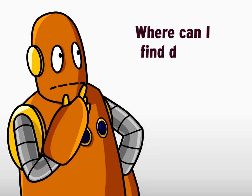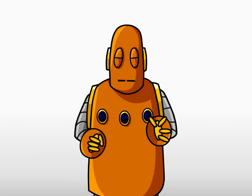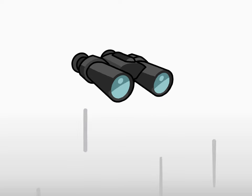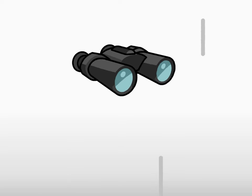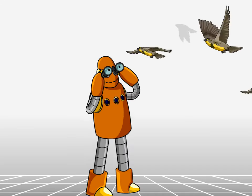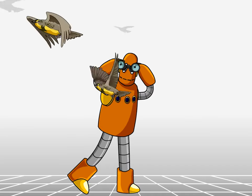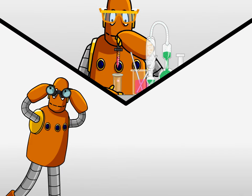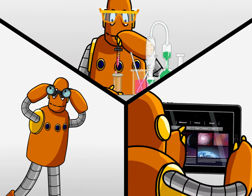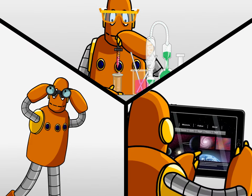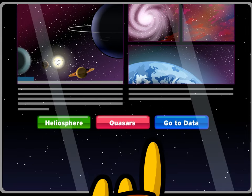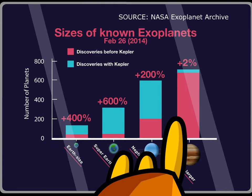Where can I find data? Data are everywhere if you're looking. You can collect your own by observing or measuring some aspect of the world around you, or by doing an experiment. Then there's all the info that scientists have made available to the public. But if you're going to use someone else's data, make sure they're reliable.